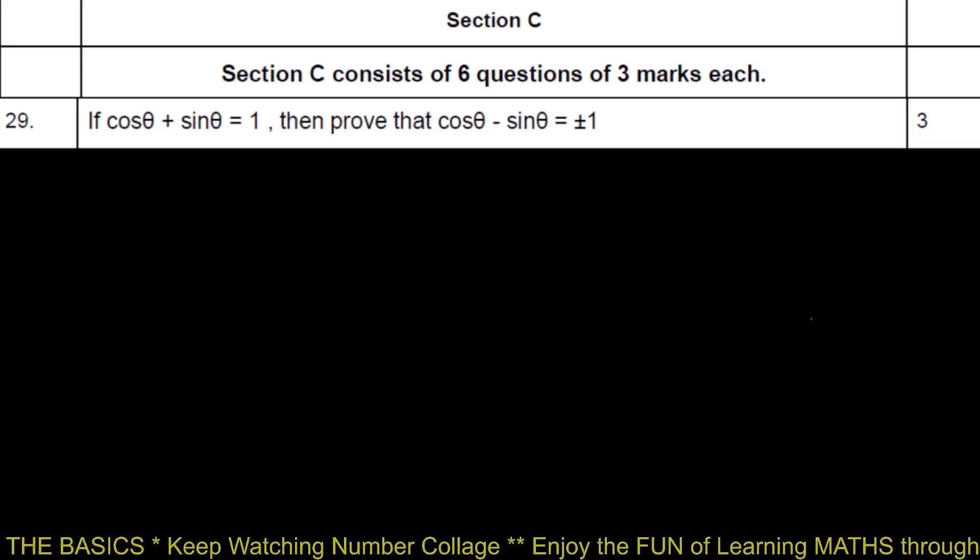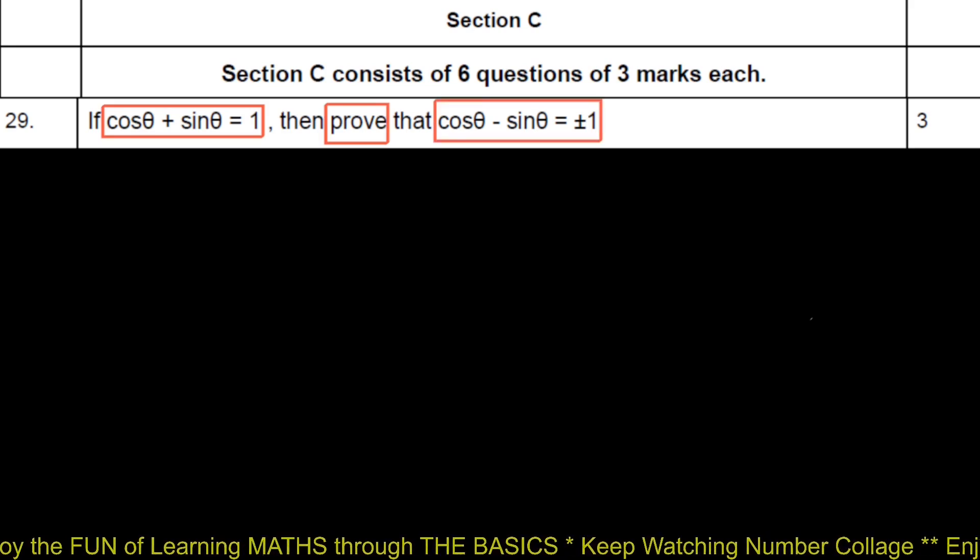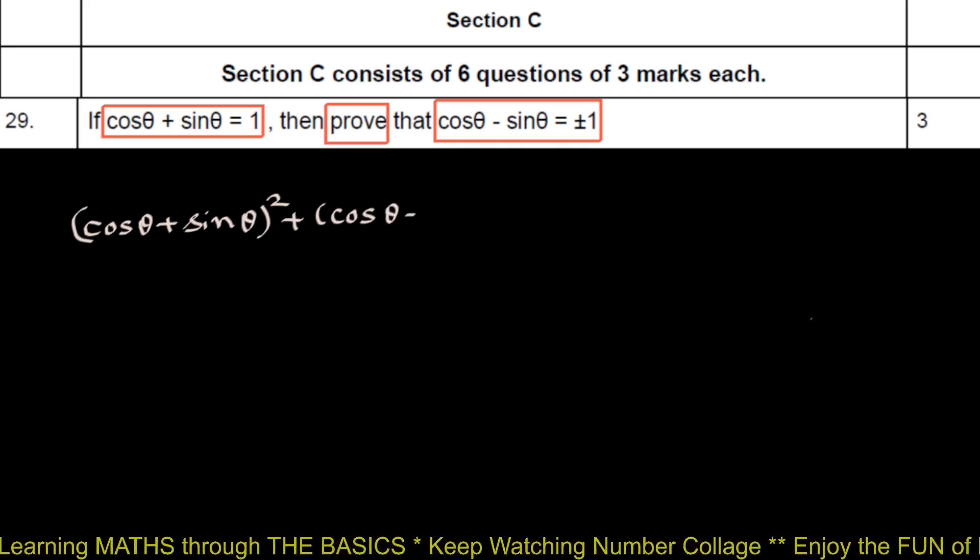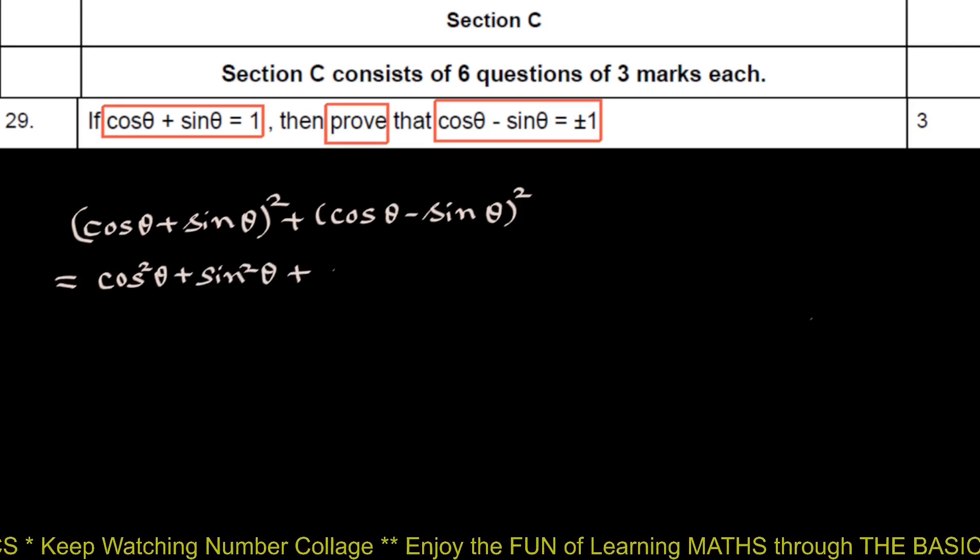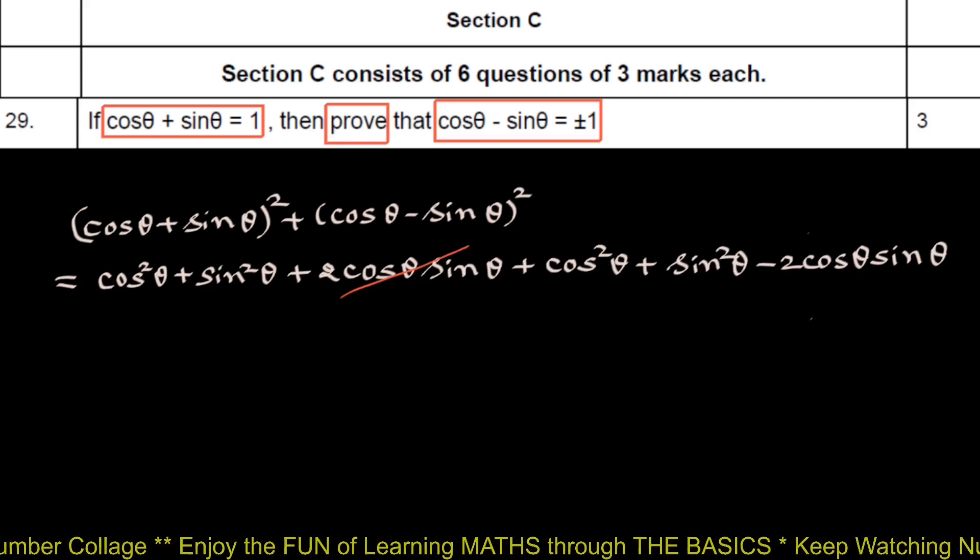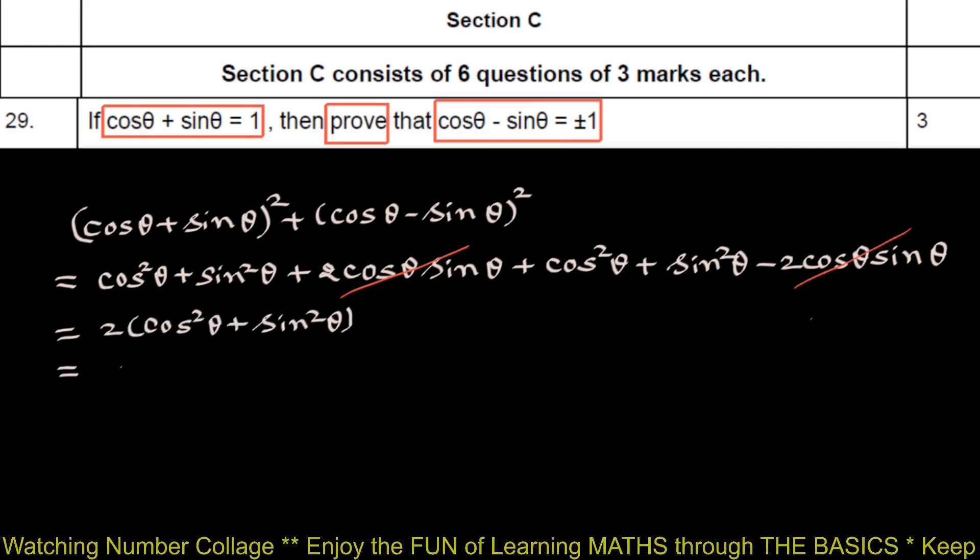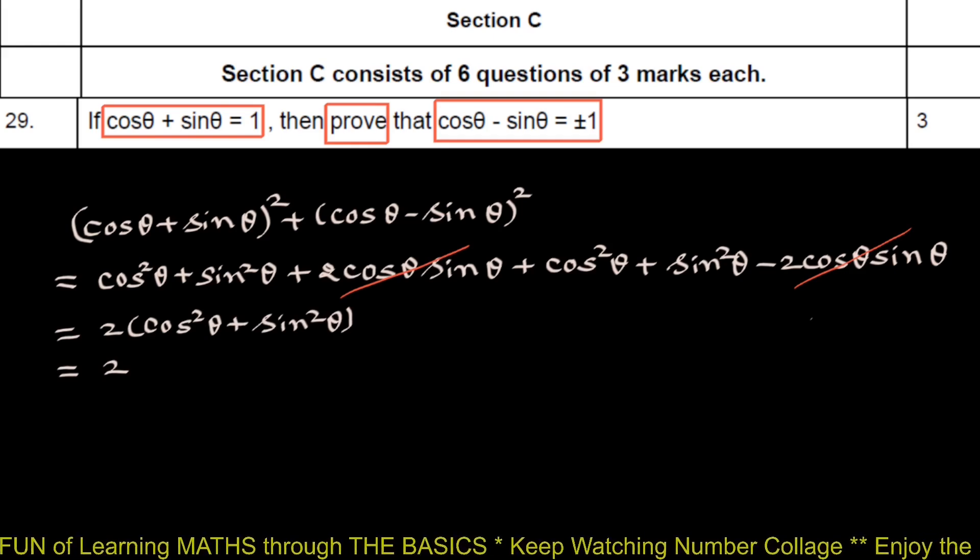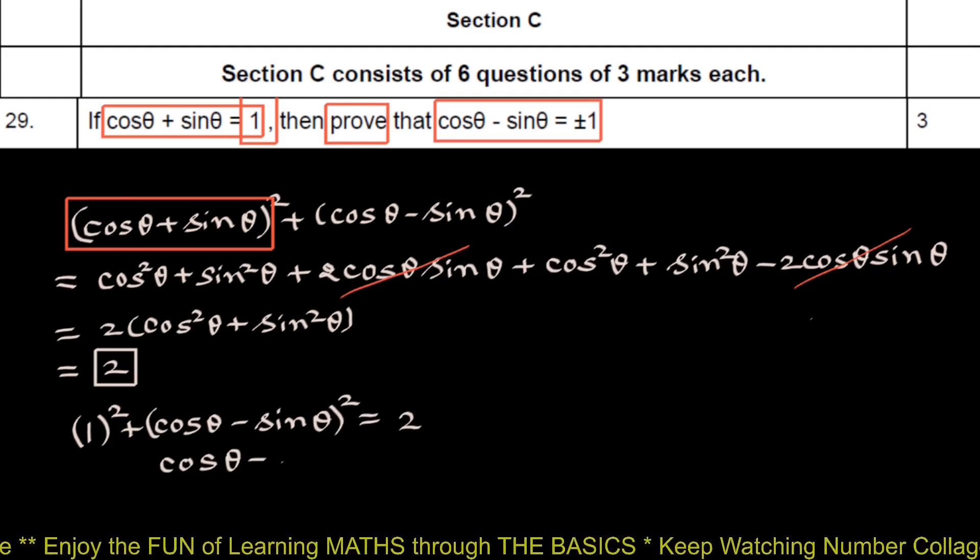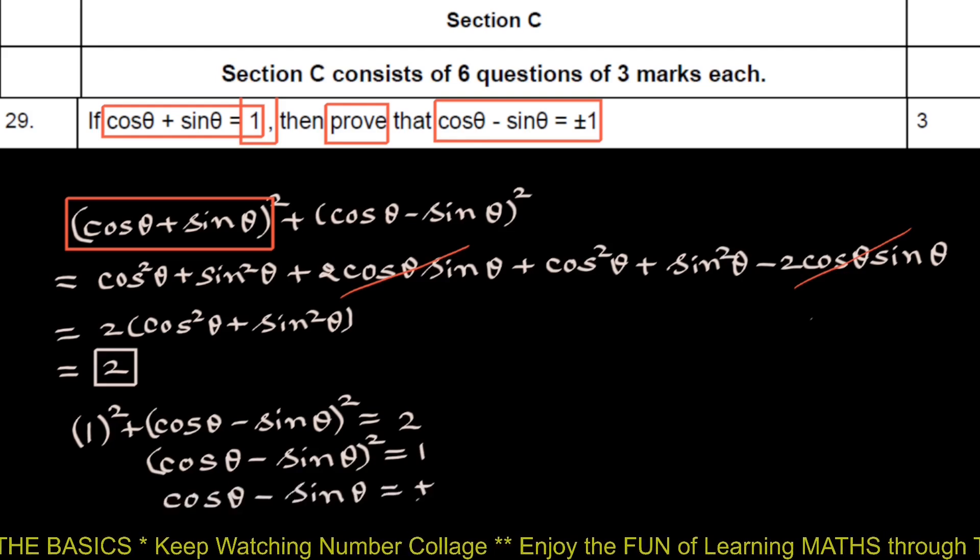We are given cos theta plus sin theta equals 1 and we have to prove that cos theta minus sin theta is plus minus 1. What we do is, we will write cos theta plus sin theta whole square plus cos theta minus sin theta whole square. That will be cos square theta plus sin square theta plus 2 cos theta sin theta plus again cos square theta plus sin square theta minus 2 cos theta sin theta. 2 cos theta sin theta minus 2 cos theta sin theta is 0 and we get 2 times cos square theta plus sin square theta, which is 2 into 1, 2. But this cos theta plus sin theta is 1, so we get 1 square plus cos theta minus sin theta whole square equals this 2. cos theta minus sin theta whole square is 2 minus 1, 1, that gives cos theta minus sin theta equals plus minus 1. Hence proved.